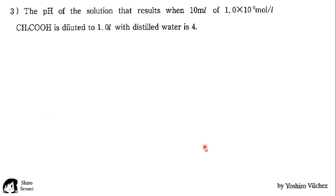The next one says, the pH of the solution that results when 10 milliliters of 10 to the minus 2 mole per liter of acetic acid is diluted to 1 liter with distilled water is 4. Now we have acetic acid. If we do the same steps, we get the number of moles is 10 to the minus 4 mole and total volume is 1 liter.